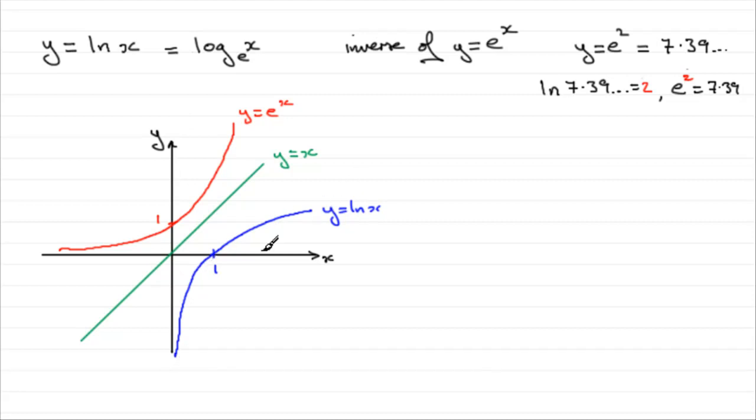Now, if you forgot this particular method, you can always resort to drawing up a table of values for the function y equals the natural log of x. Just start with x, and then we'll have the y values. And let's say you started with x being 0.001. And if you work that out on your calculator, what you'd find to one decimal place is it came out to be minus 6.9.